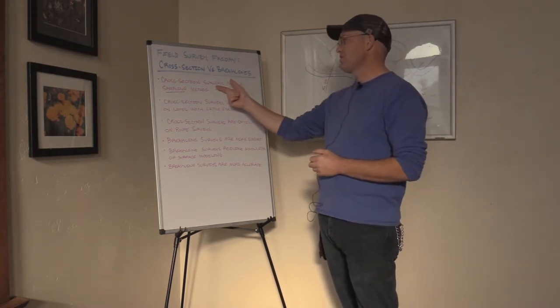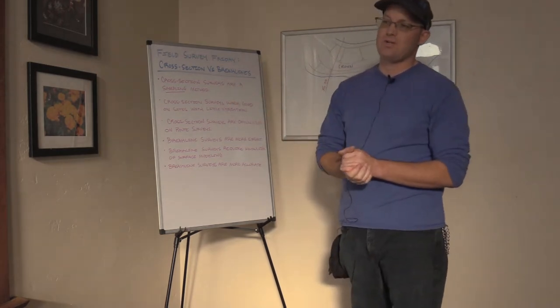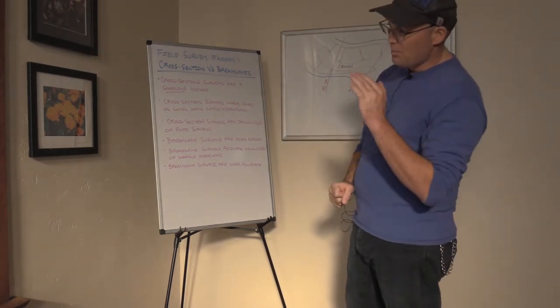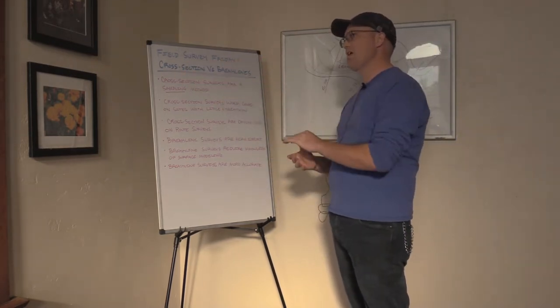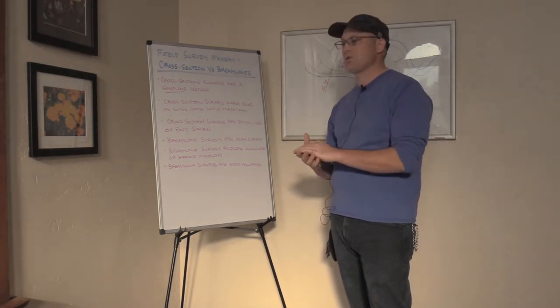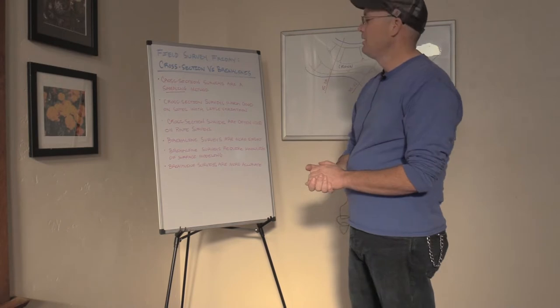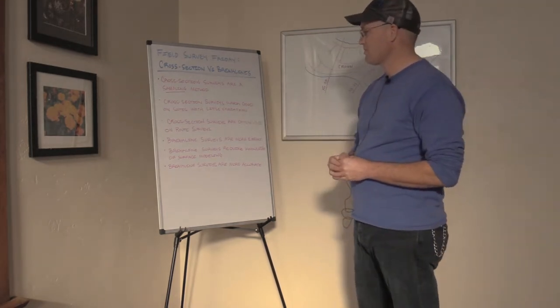So as a consequence of this first point, cross-section surveys work good on sites with little variation. So, for example, if you're doing a topographic survey of a road, and the road's fairly typical through the survey area, it doesn't change width or change structure, but it's pretty typical. Then a cross-section survey works pretty good in that circumstance.